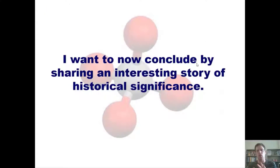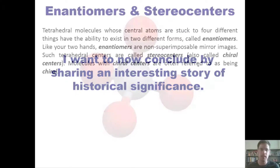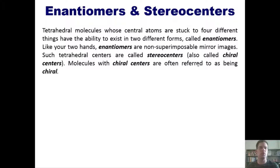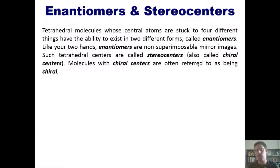I'd like to conclude this set of videos by sharing an interesting story of historical significance. Tetrahedral molecules whose central atoms are bonded to four different things have the ability to exist in two different forms, which are called enantiomers. Just like your hands, enantiomers are non-superimposable mirror images.